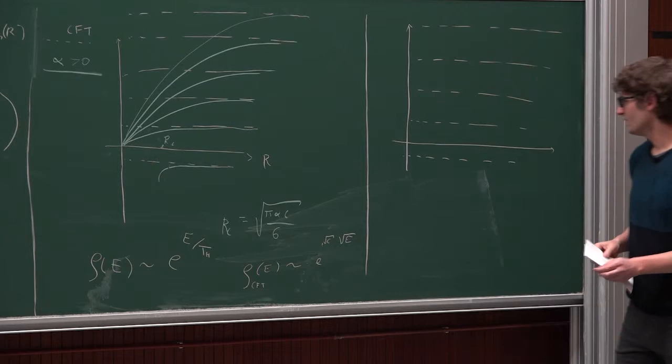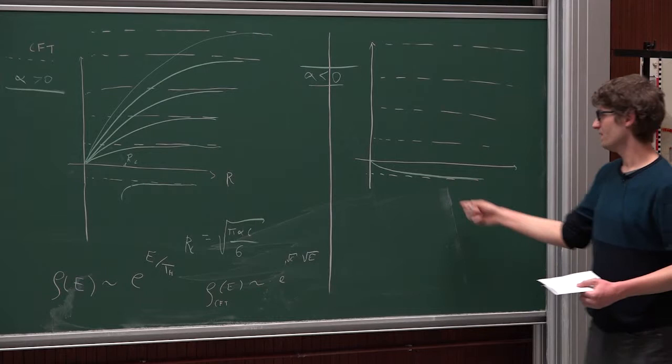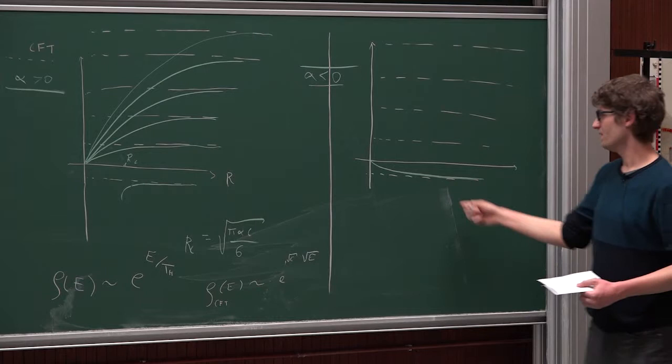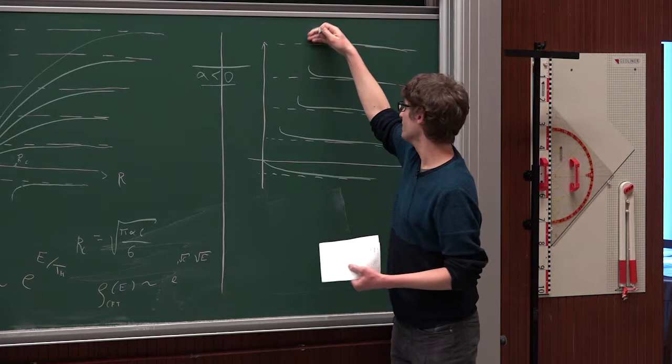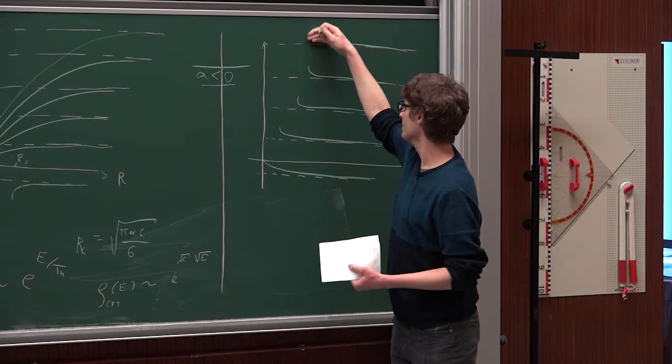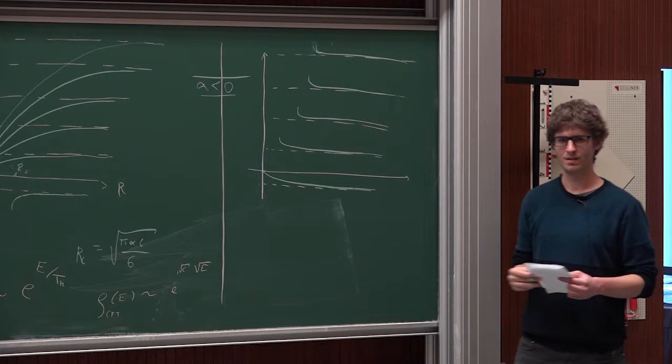Now, we consider the case where alpha is negative. Well, in this case, you would find that there are essentially, so this will be alpha less than zero and they are deformed in the other direction. So, the positive levels now will all develop a singularity. So, these positions move to the right. So, you will find that now, it's even more strange, because you find that for a given value of R, only a finite number of levels are real and all the other ones will be complex.